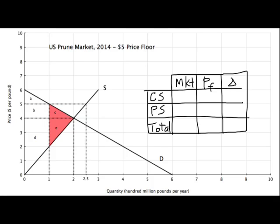So under the market outcome, remember we've got 200 million sold, area under the demand curve above the price. Four dollars a pound was the price. We've got A, B, C for consumer surplus. Producer surplus is area below the price above the supply curve: D, E. Aggregate surplus is A, B, C, D, E.